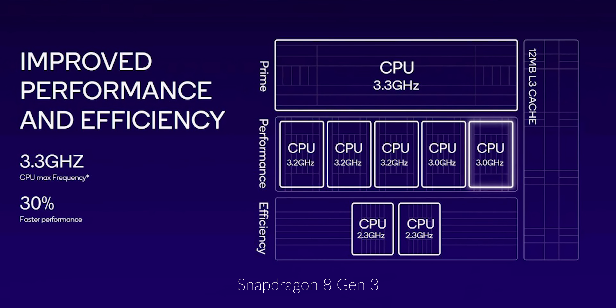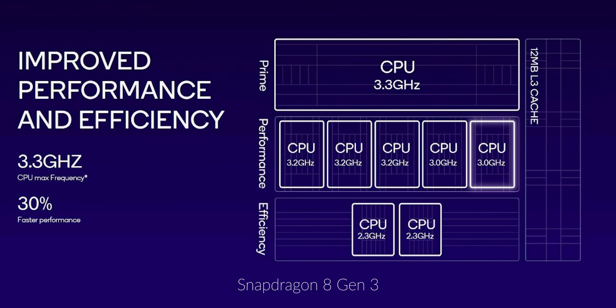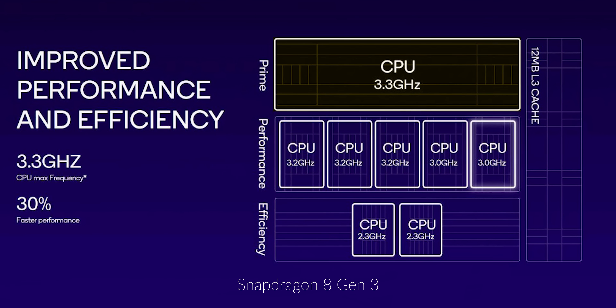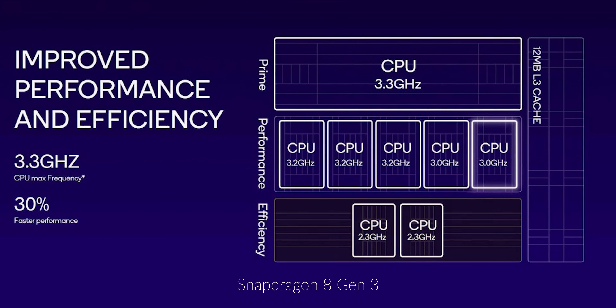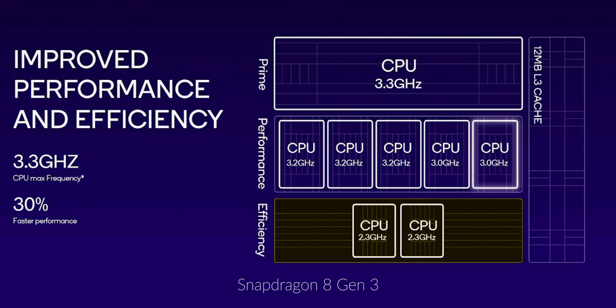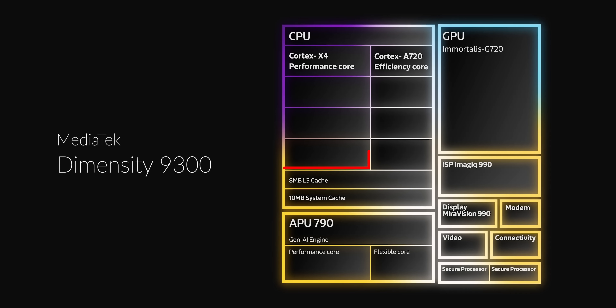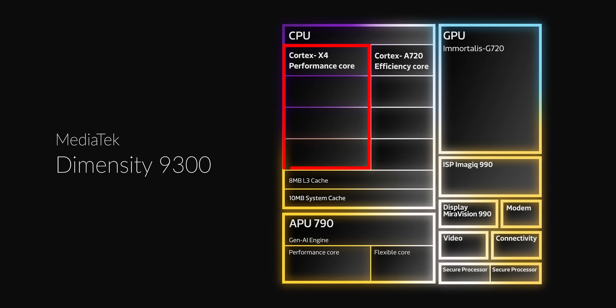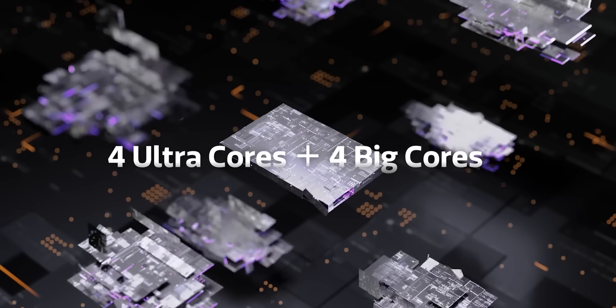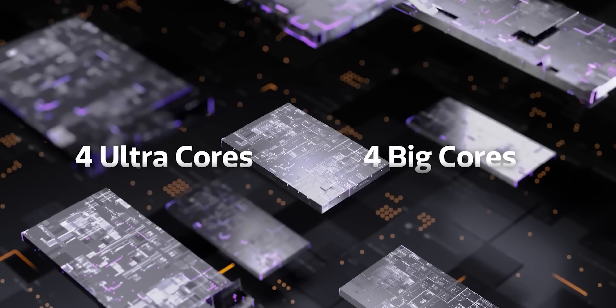To start off with, let's talk about the core architecture of both of these system on chips, which are completely different. The Snapdragon 8G3 has a 1+5+2 setup — one big core, five medium cores, and two little cores. The Dimensity 9300, on the contrary, has a 4+4 setup with four big cores and four medium cores. The Dimensity 9300 doesn't have any little cores, which is a really brave move.